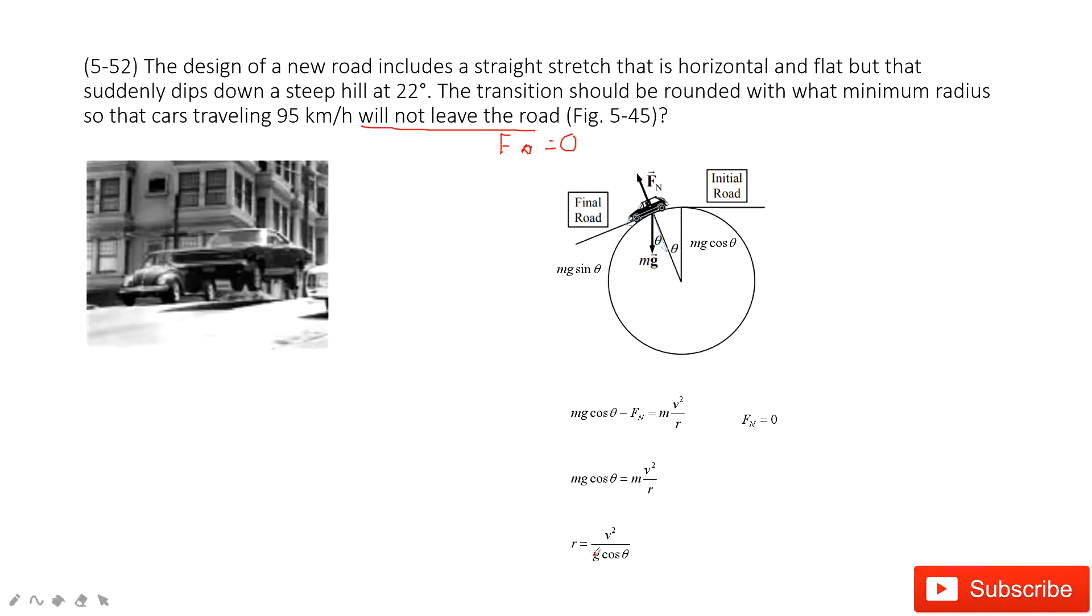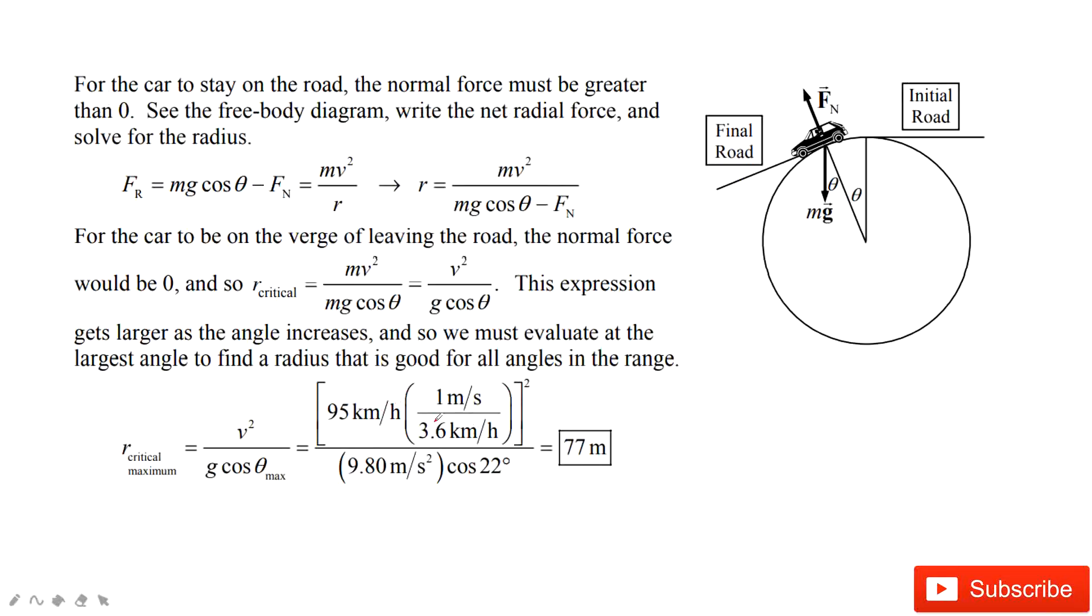Then we can get the radius equal to v squared divided by g cosine theta. Then we can input the known quantities because the velocity v is given, angle theta is given. After inputting the numbers inside, you find r is 77 meters.